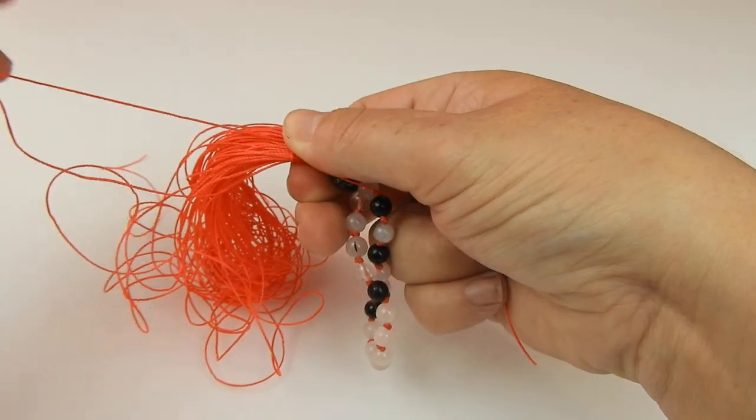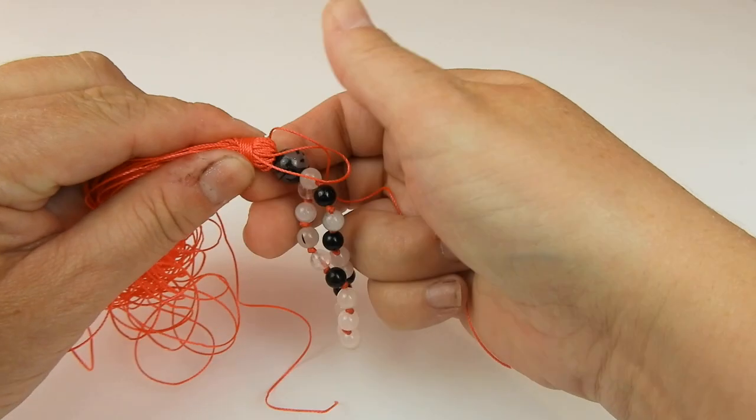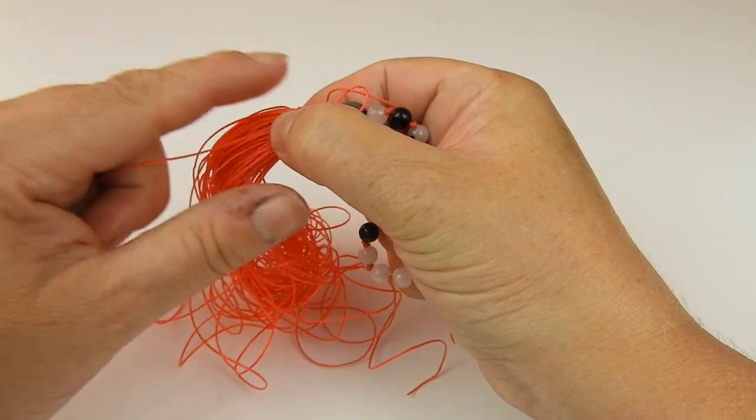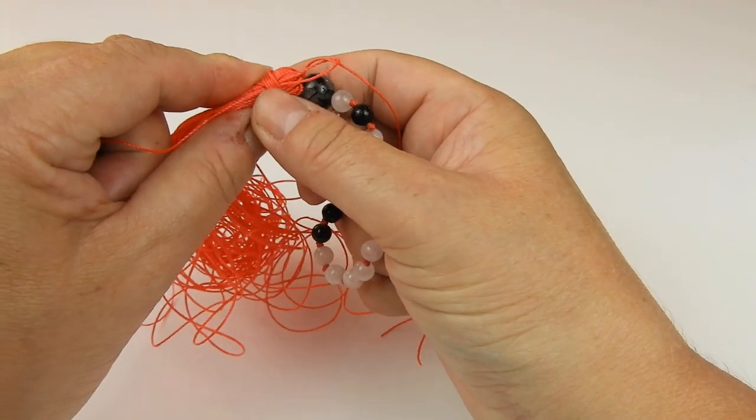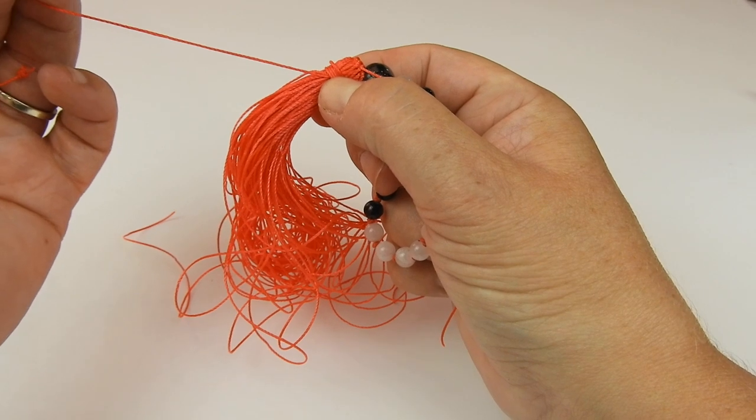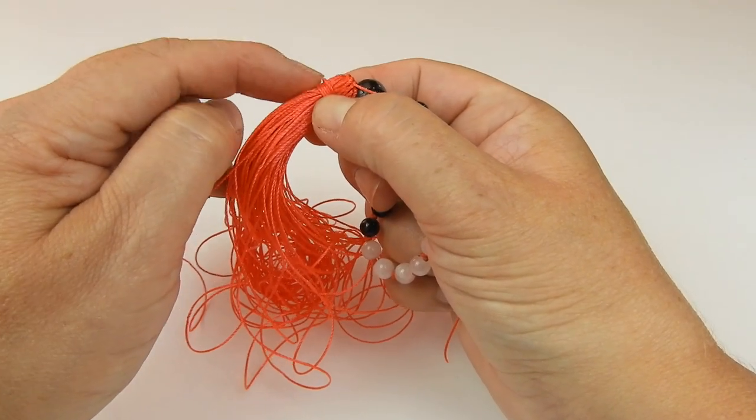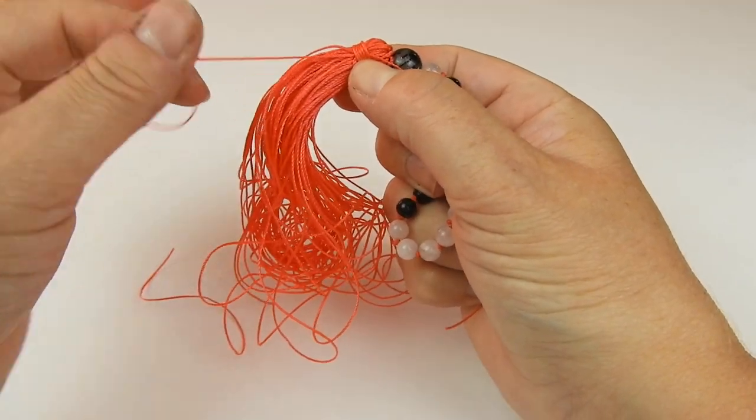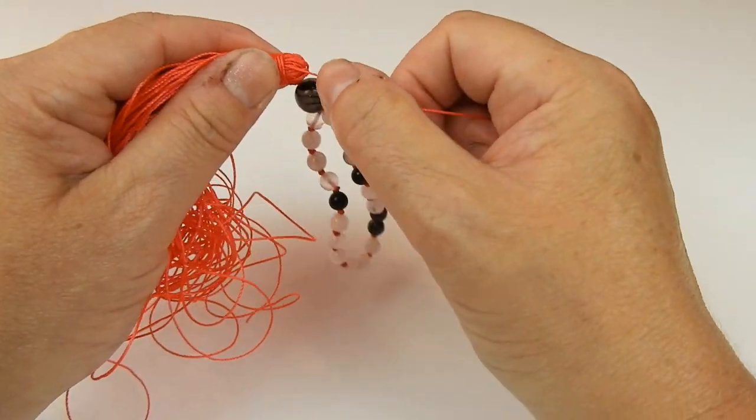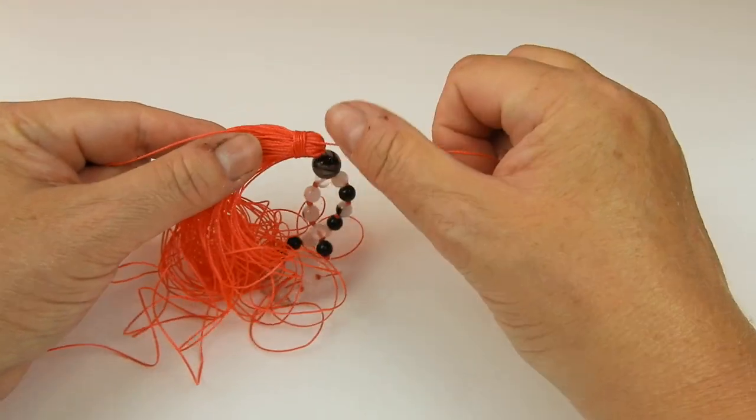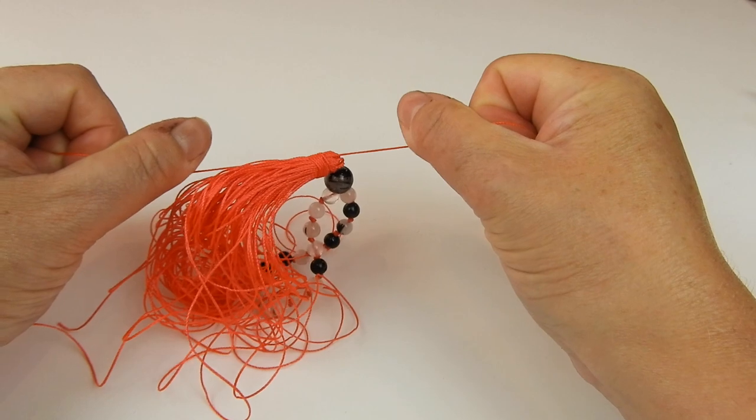Because that end now, as I pull the end with the knot in it, the loop is going to go back underneath these wraps. You can see there, the loop's now gone underneath those two wraps. I can take both ends and pull tightly.